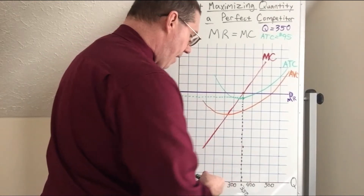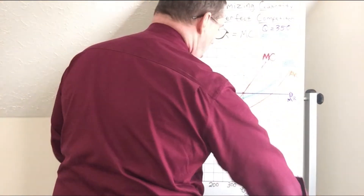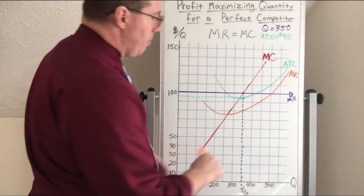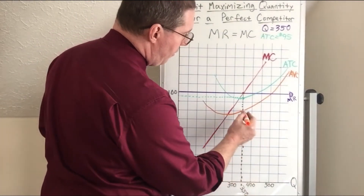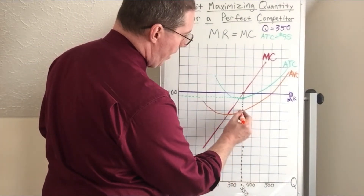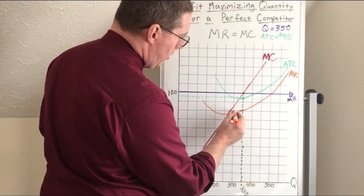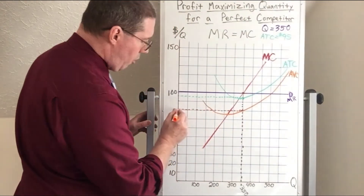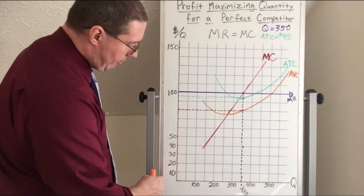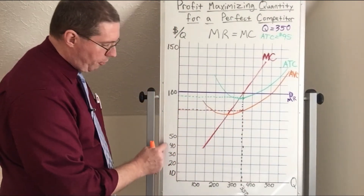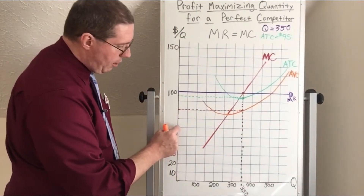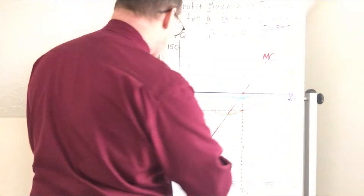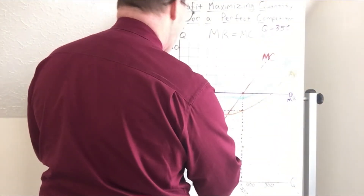Now we can identify the average variable cost. It looks like average variable cost intersects 350 right there. The price axis is going up by 10 at a time: 10, 20, 30, 40, 50, 60, 70, 80, 90, 100. So we're going to say that average variable cost is $80.